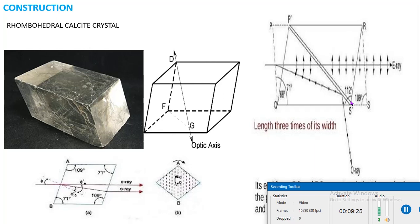The crystal is then cut diagonally into two parts: PQS′ is one part and P′RS is another part. The polished surfaces are then connected together with a special cement known as Canada balsam.